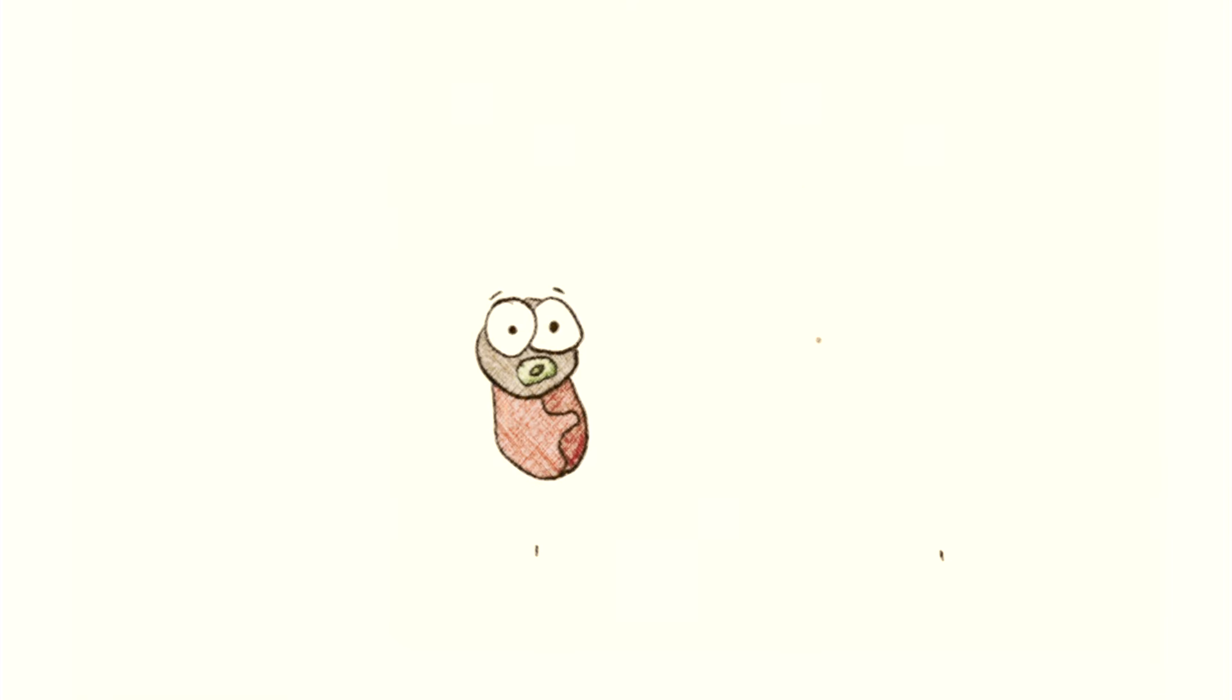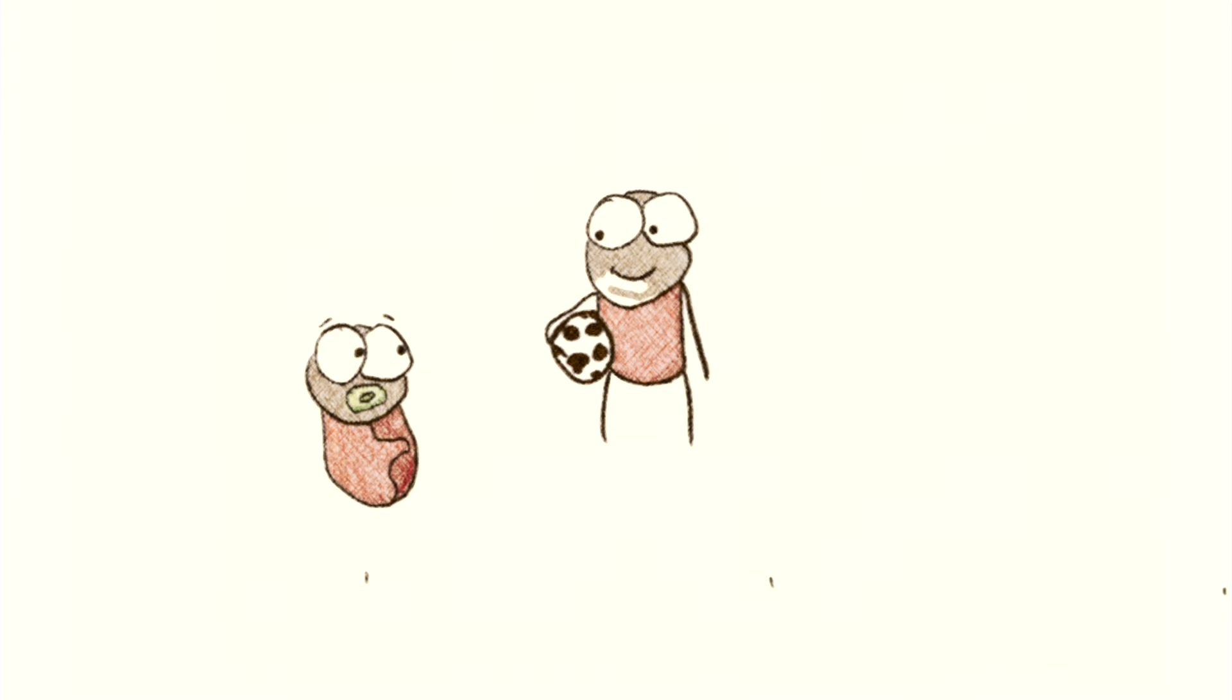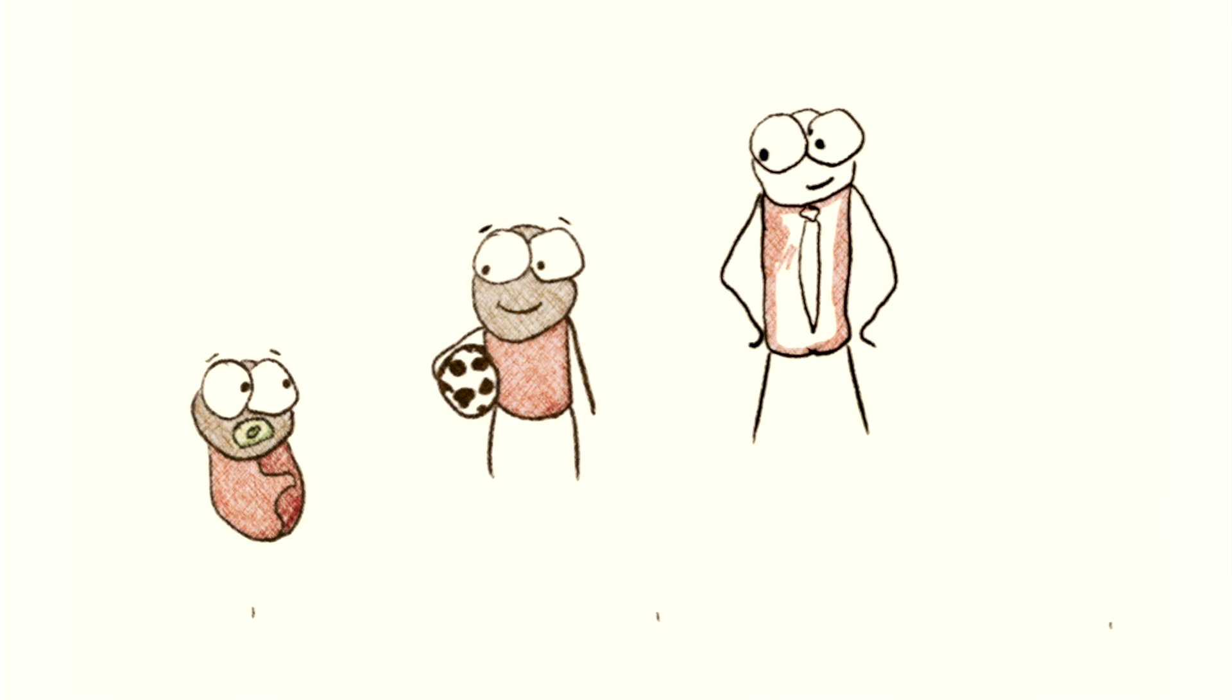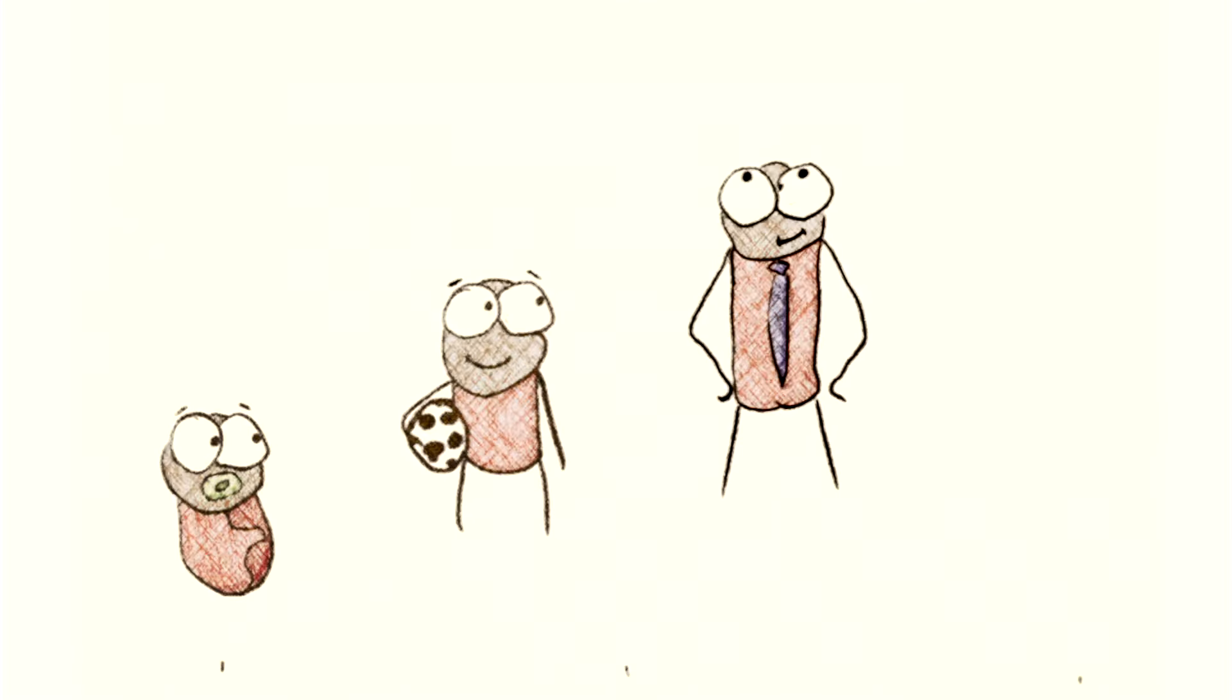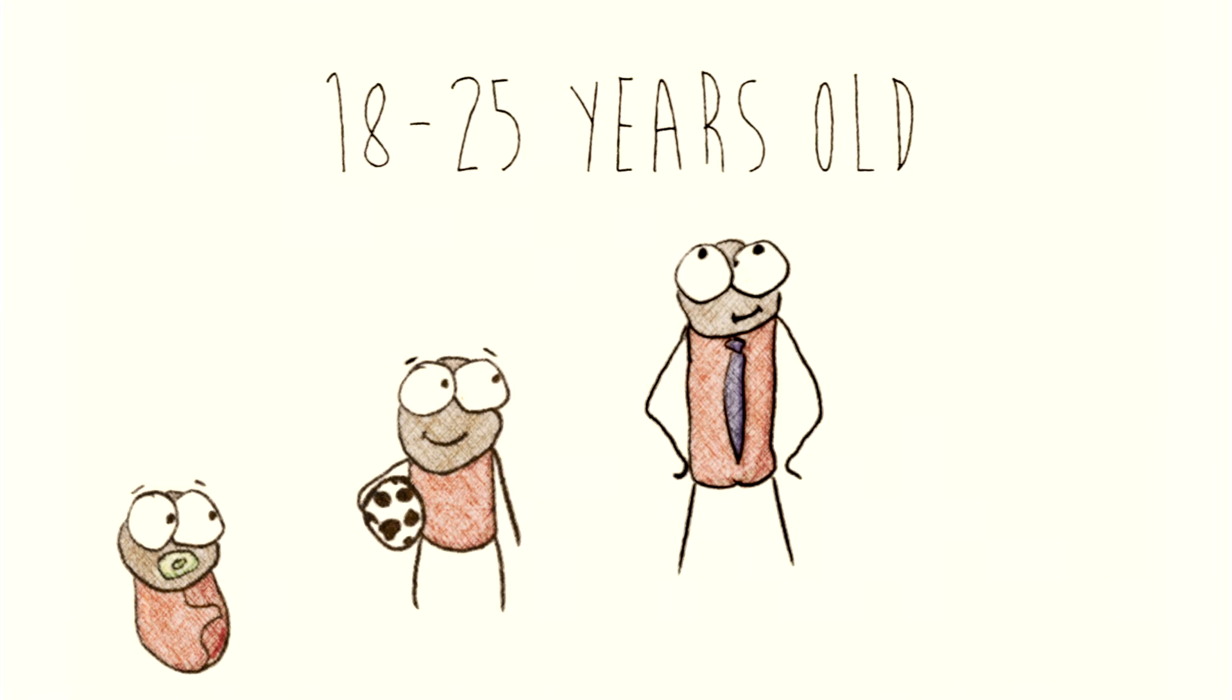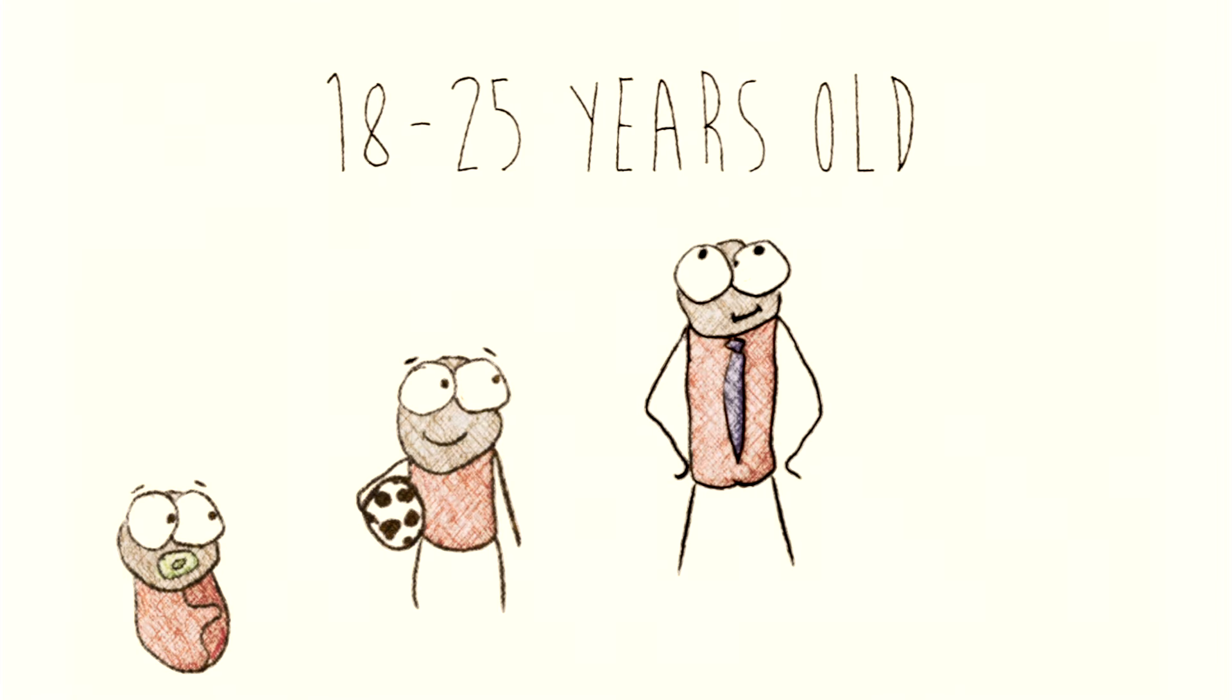Kids form bone faster than they lose bone. And even after kids stop growing taller, they continue to make more bone than they lose. And that's because the bones continue to get denser until they reach what doctors call peak bone mass, the greatest amount of bone you'll ever have. It usually happens sometime between the ages of 18 and 25.